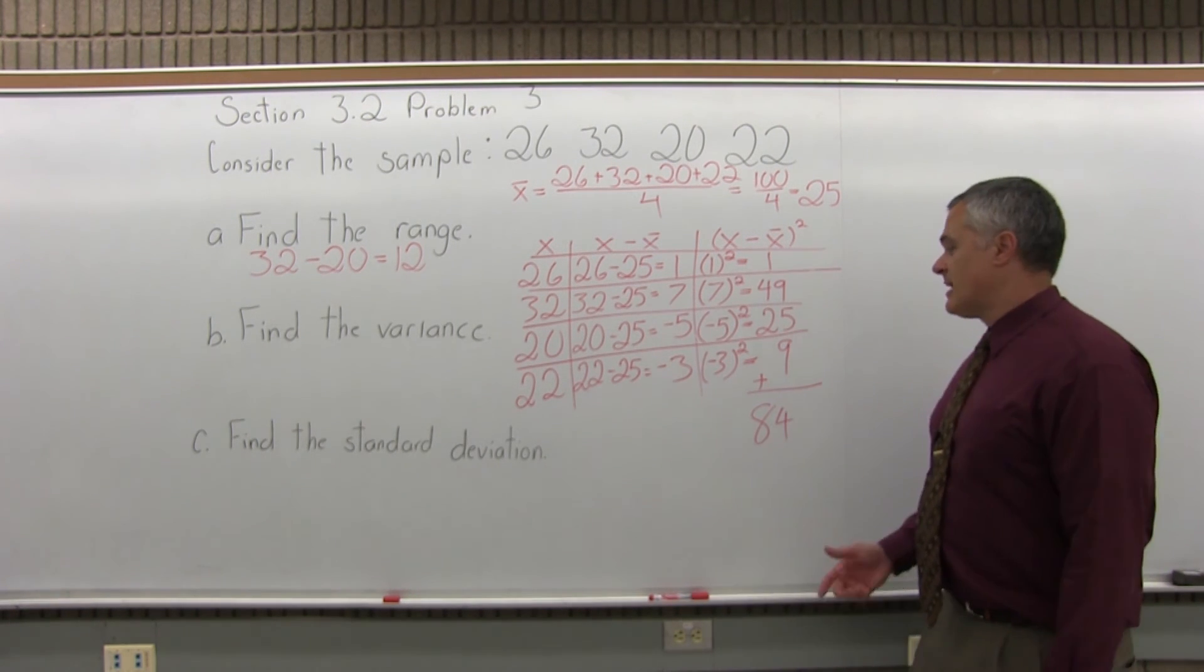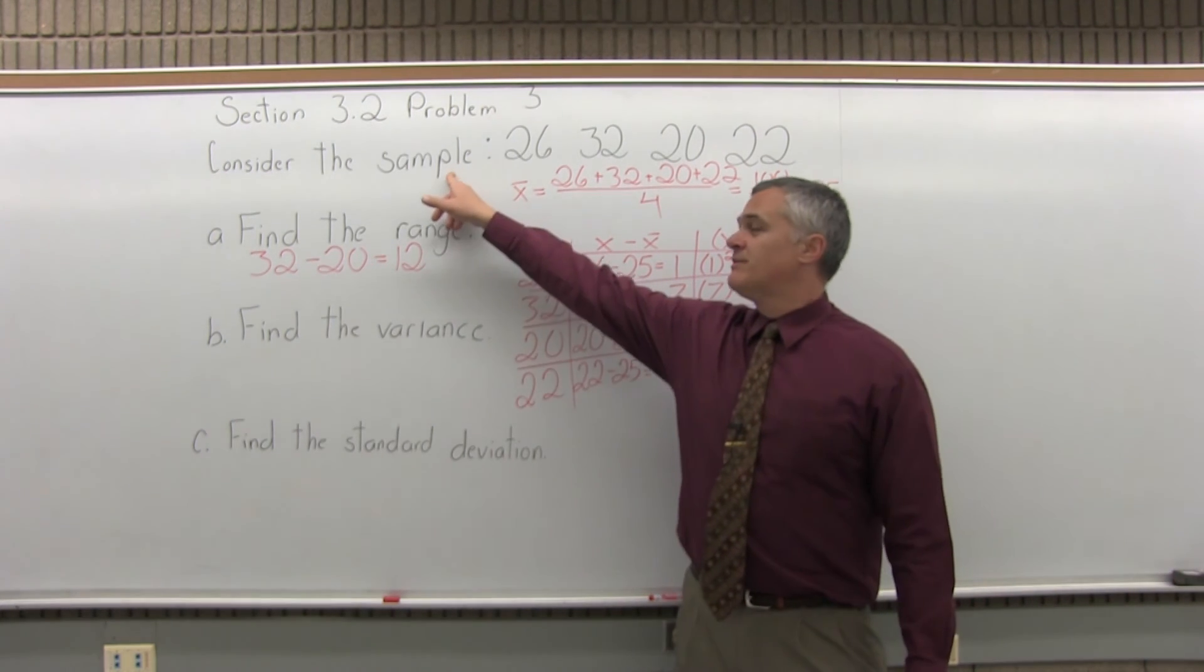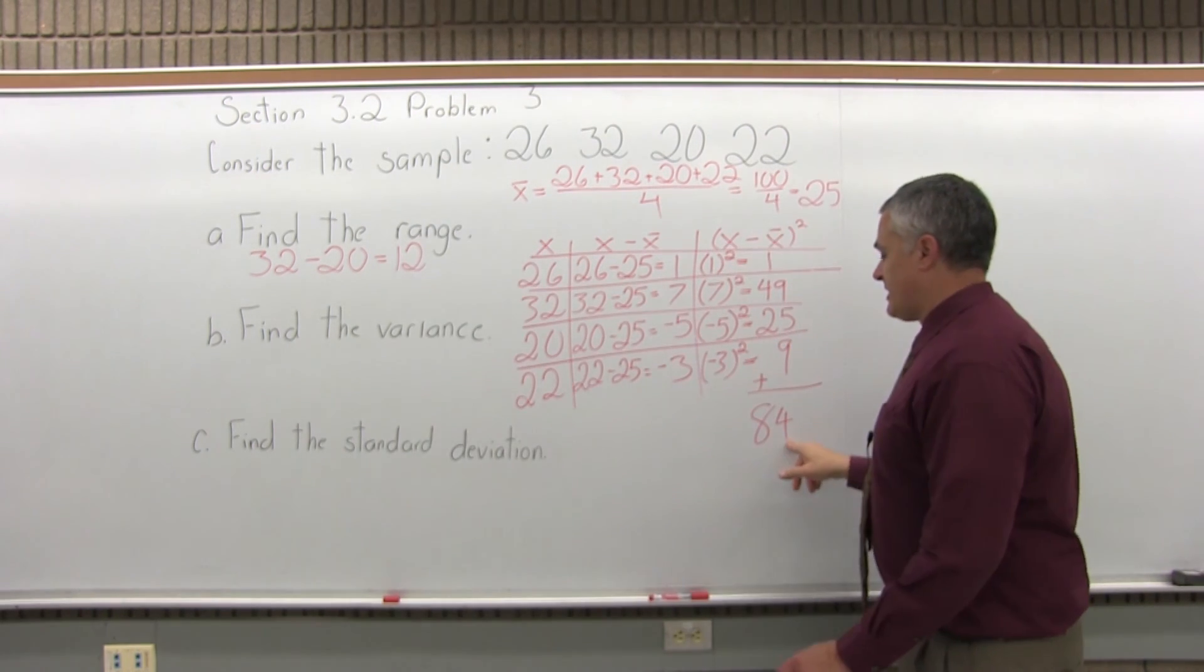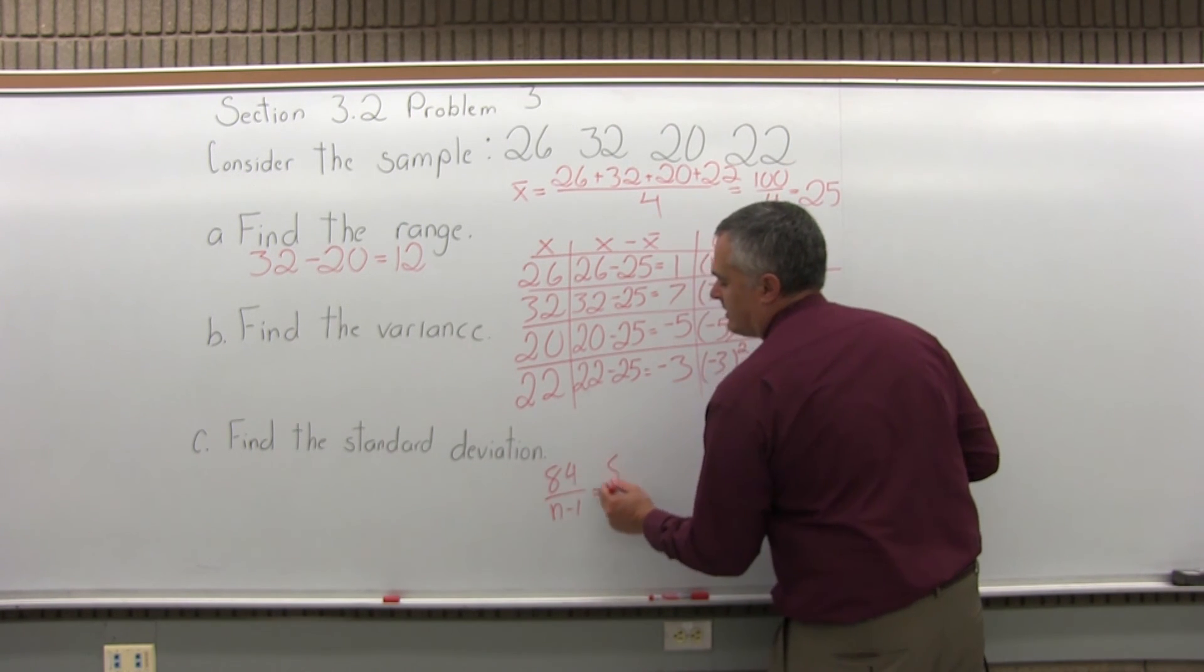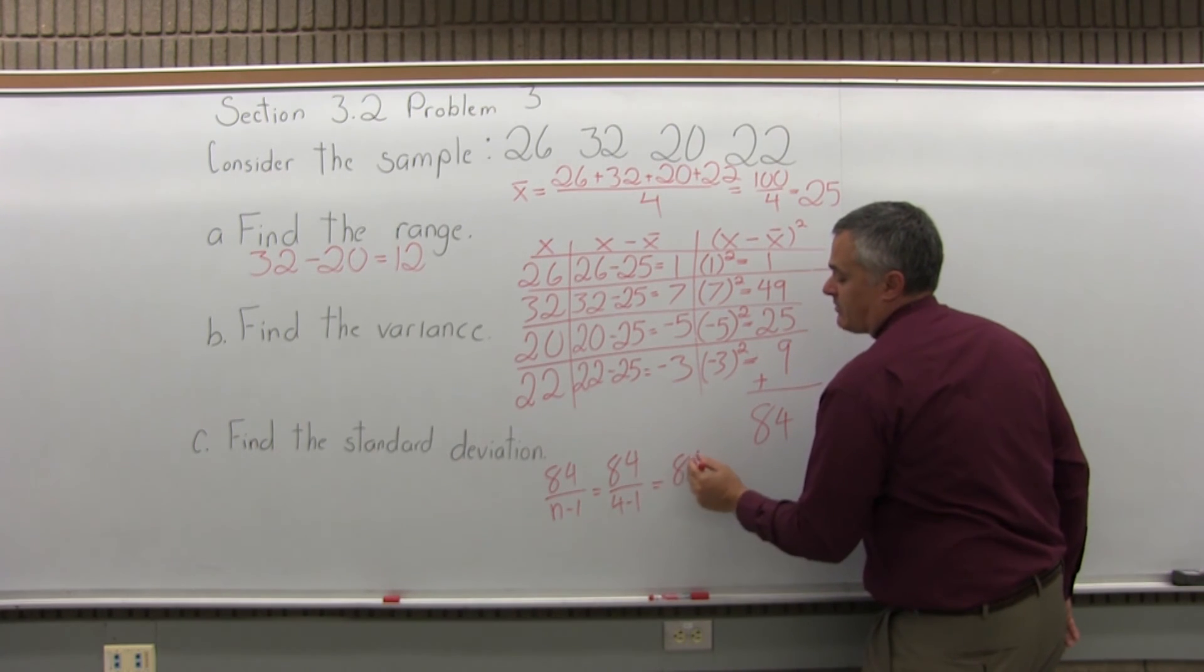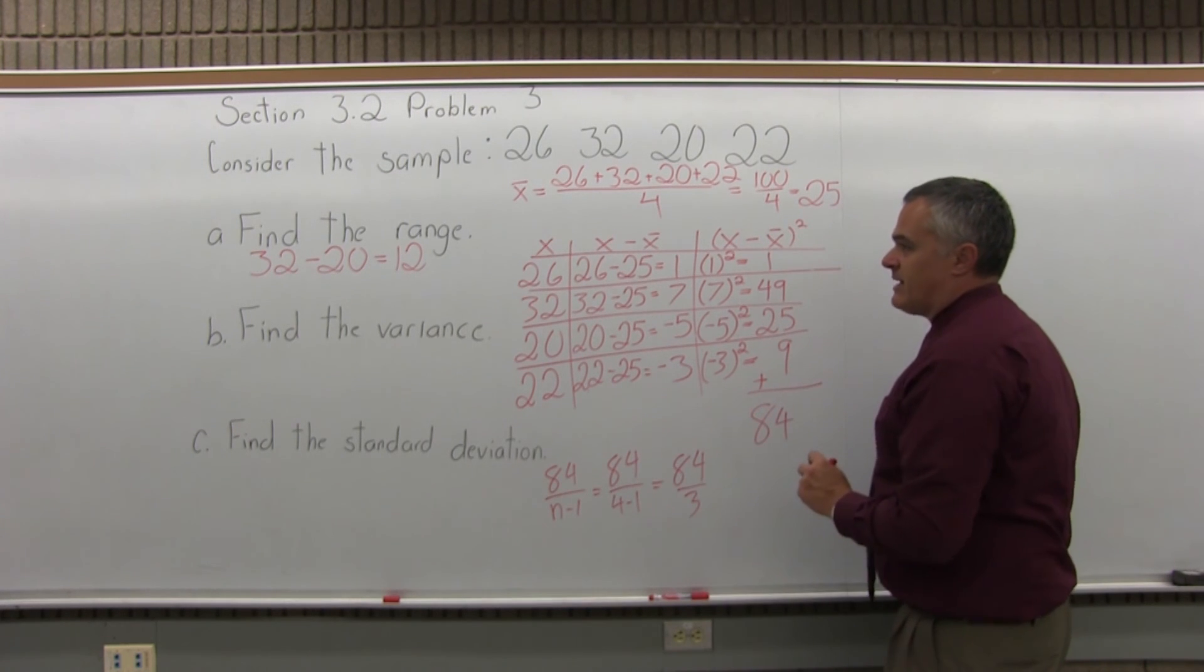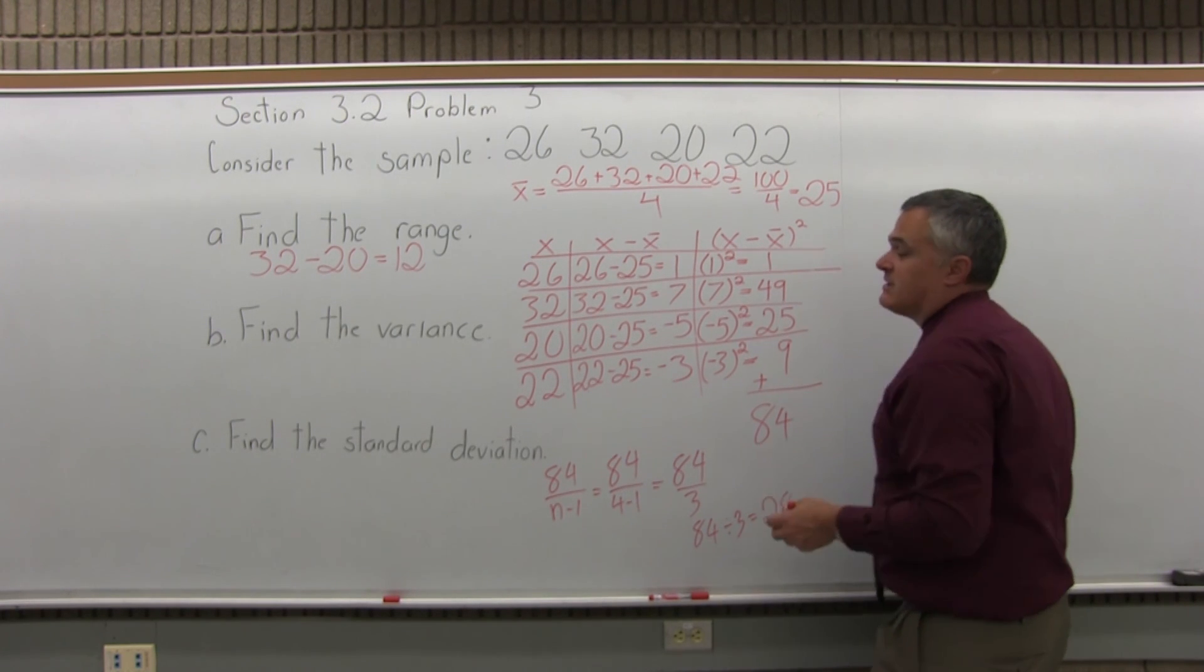And then finally step 4, the last step. Take your total from step 3, divide by n minus 1 for a sample, divide by n for a population. So this is a sample, the problem says sample. So, I'll take 84, my total from step 3, divide it by n minus 1, n is 4 because I have 4 data values, 1, 2, 3, 4, so n minus 1 is 4 minus 1, and that will be 84 divided by 3. So, 84 divided by 3 is 28. So that makes the variance 28.